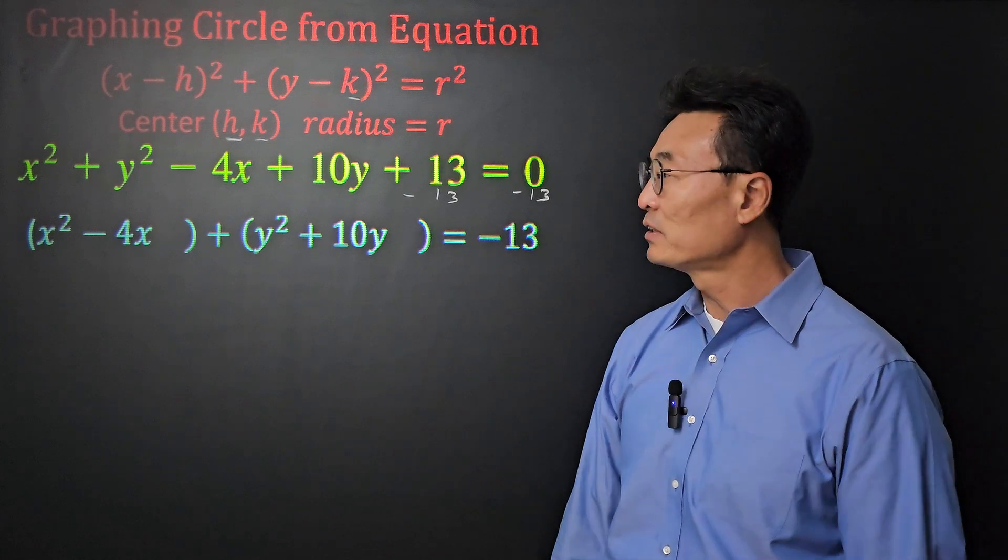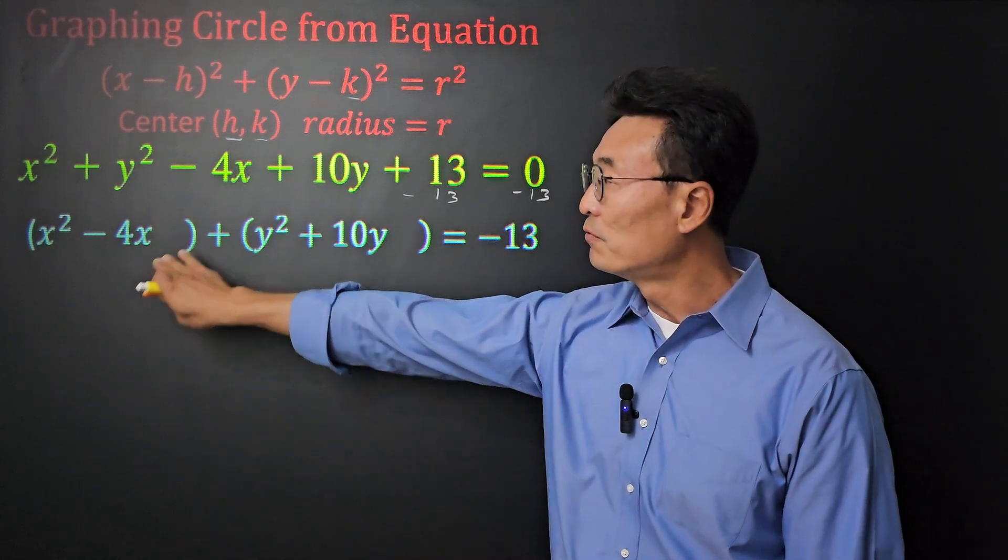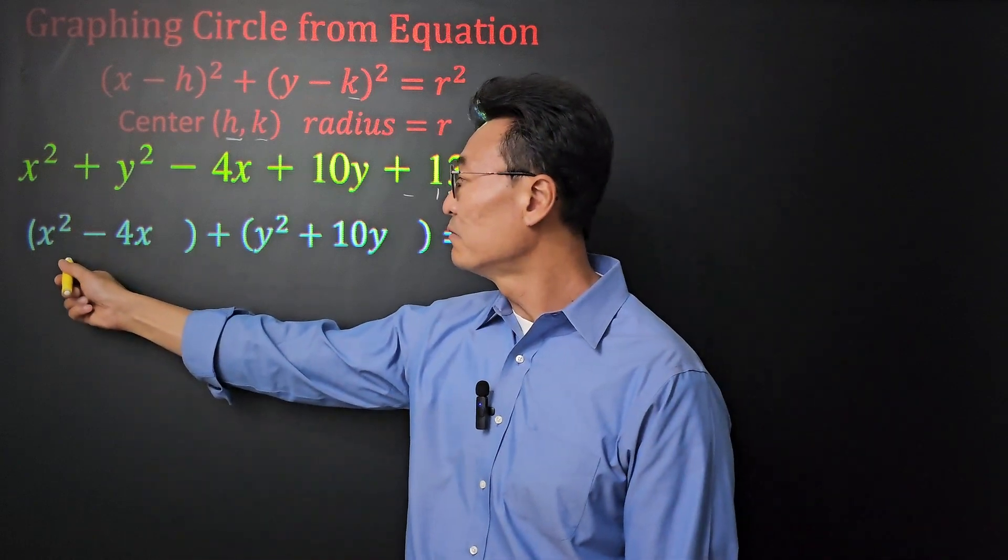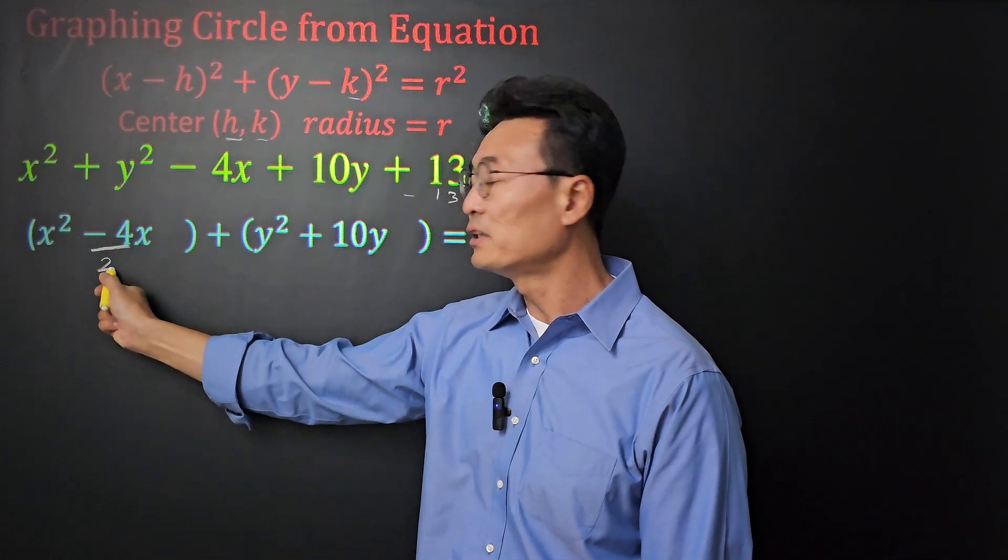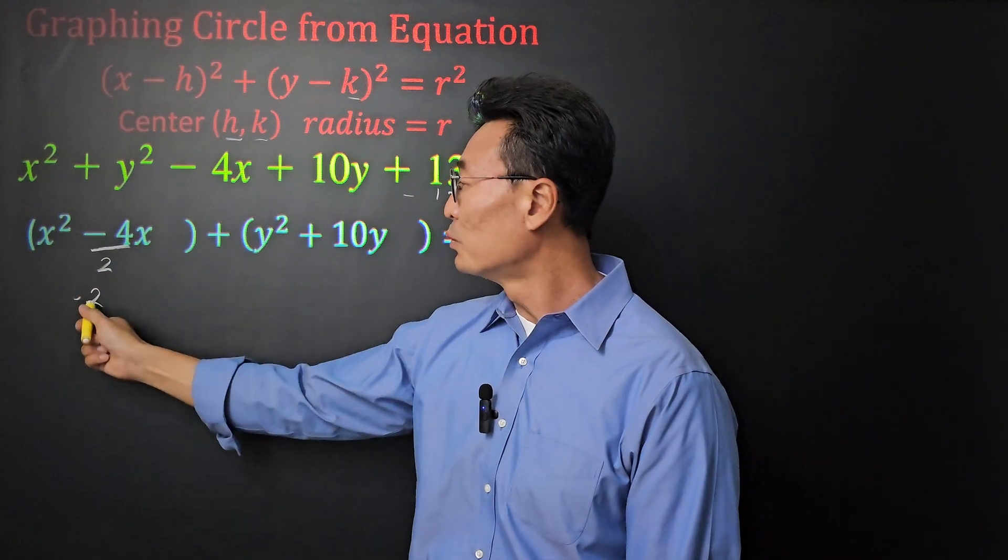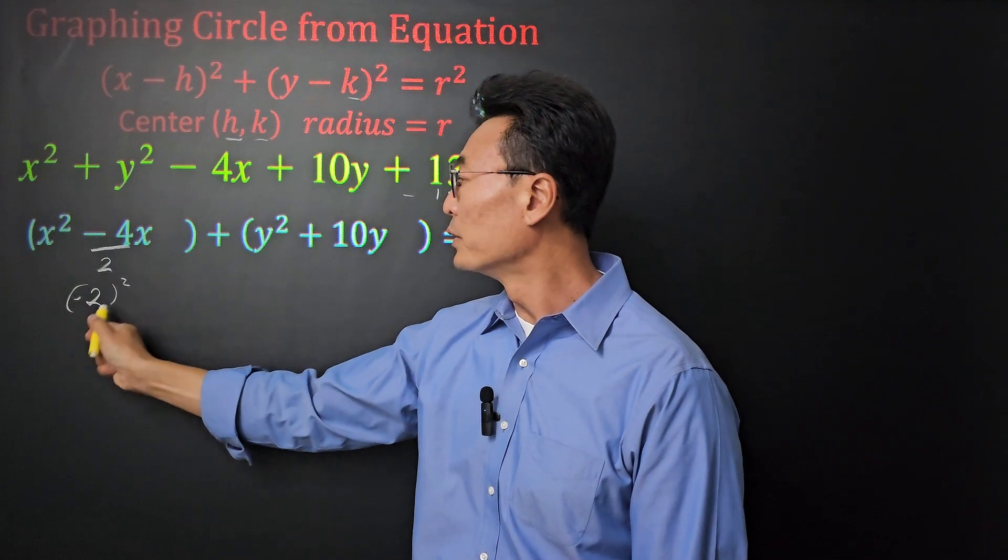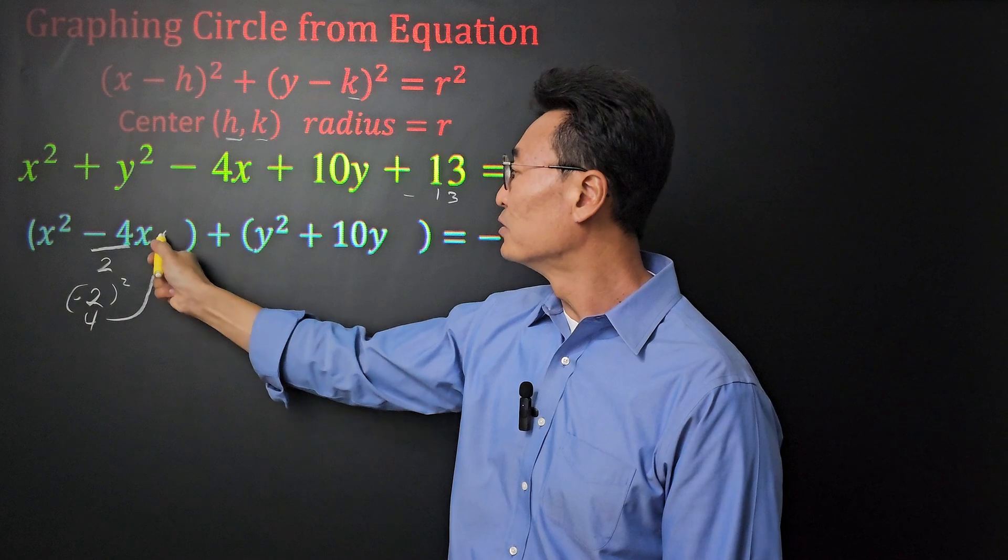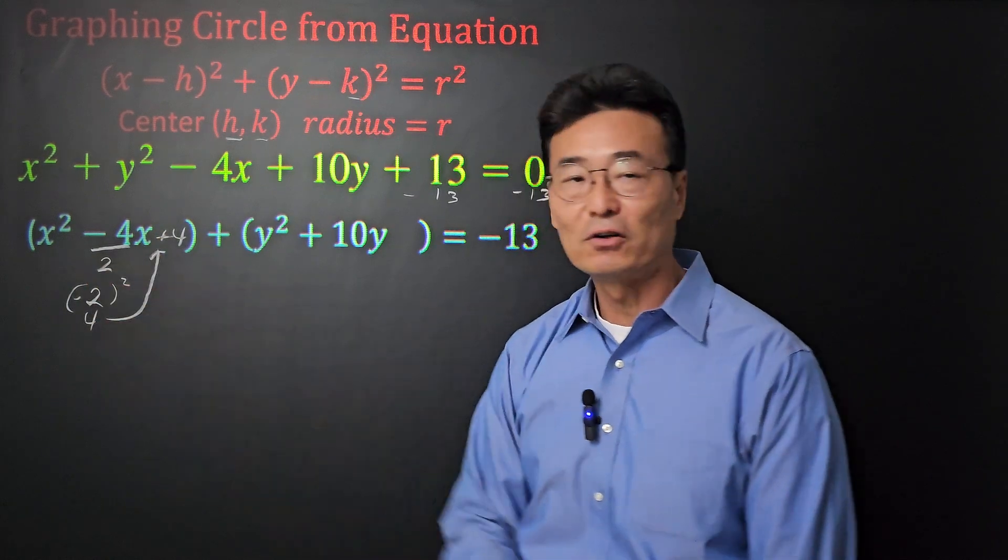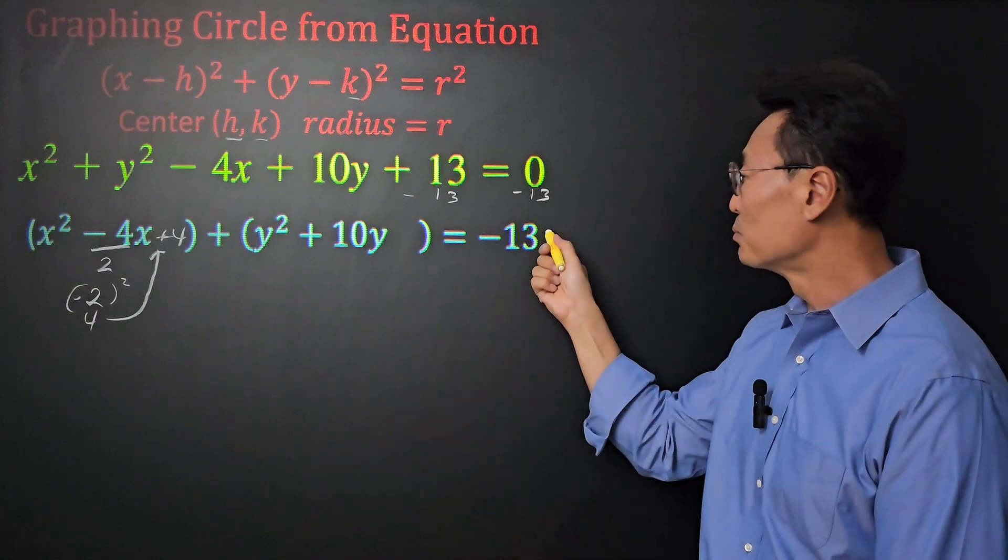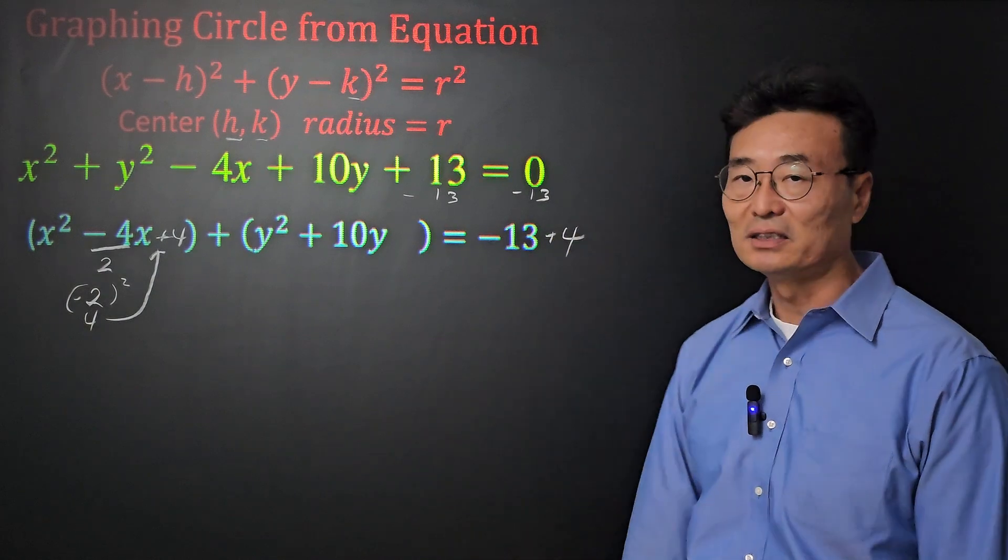Next, we're going to be completing the square to fill that empty space. To do that, we take that negative 4 and we divide it by 2, and of course it's equal to negative 2, and then we're going to square the negative 2, where we get a positive 4. We're going to take that 4 and put it into that space that we had made earlier. And if we put a 4 on the left side of the equal sign, we need to put a 4 on the right side of the equal sign.